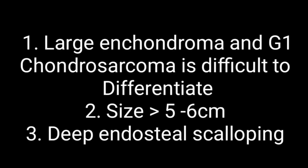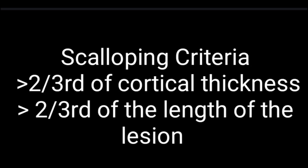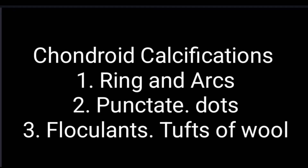The key take-home points: large enchondroma and grade one chondrosarcoma are difficult to distinguish. If the enchondroma exceeds five to six centimeters, there is a likely possibility of malignant transformation. The second criterion is deep endosteal scalloping — if scalloping is more than two-thirds of the cortical thickness, or more than two-thirds of the length of the lesion, this indicates malignant transformation.